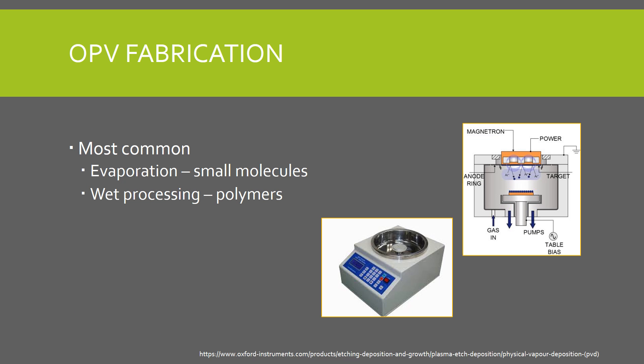Evaporation and wet processing are the two most common techniques for organic thin film production. Evaporation requires the organic substance to withstand high temperatures, while wet processing requires the substance to be soluble. Since polymers generally decompose under high temperatures and are soluble, and small molecules can withstand high temperatures but are less soluble, evaporation is generally used for small molecules and solution processing for polymers. To generate a film by evaporation, the target material is vaporized in a vacuum chamber and is then redeposited on the substrate. The vacuum is strong enough that the mean free path of the target substance is larger than the distance between the source and the substrate.